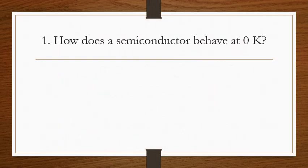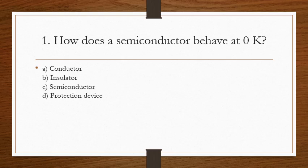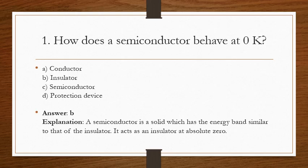The first question: how does a semiconductor behave at zero Kelvin? The correct answer is B. A semiconductor is a solid which has the energy band similar to that of an insulator at zero Kelvin.